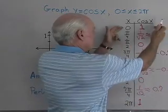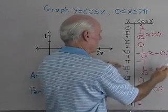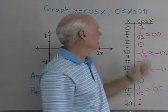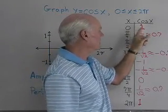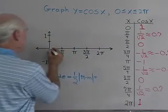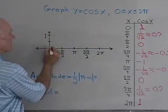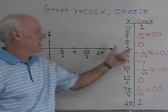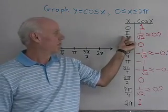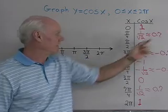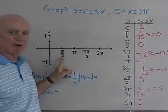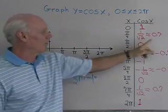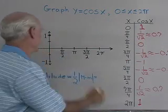Each row in the table gives me an ordered pair (x, y) where y is the cosine of x. Let's plot our first ordered pair: x equals zero, y equals one — I get this point on the graph. My second ordered pair is pi over four and 0.7. Since I can see pi over two on the axis, pi over four is halfway between zero and pi over two, with y value 0.7.